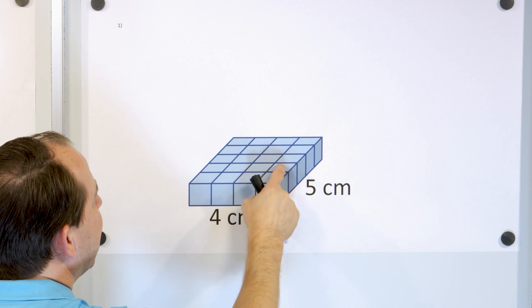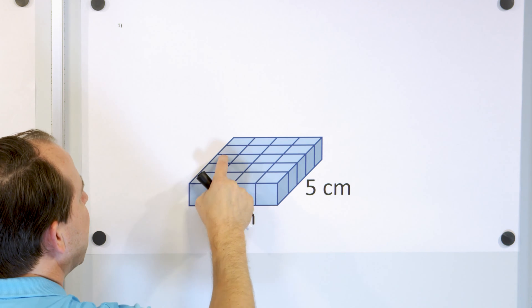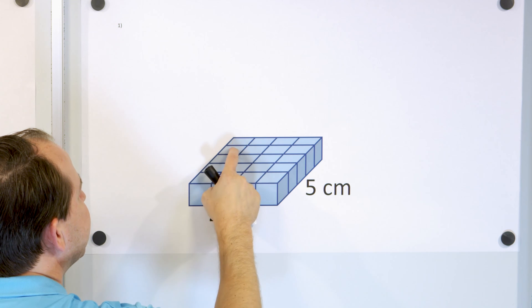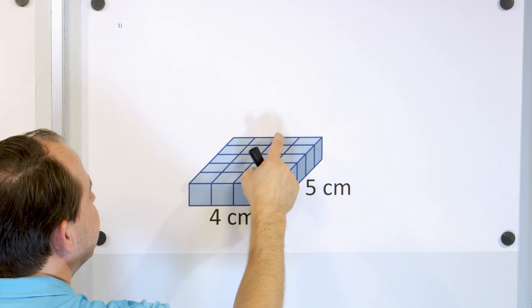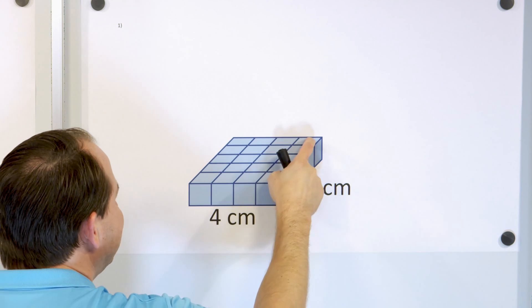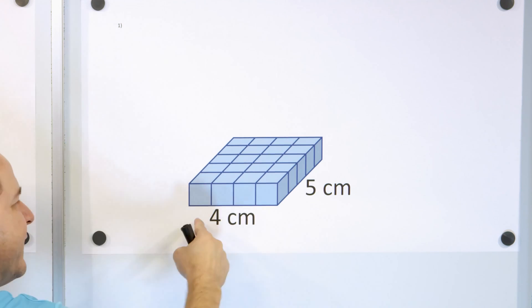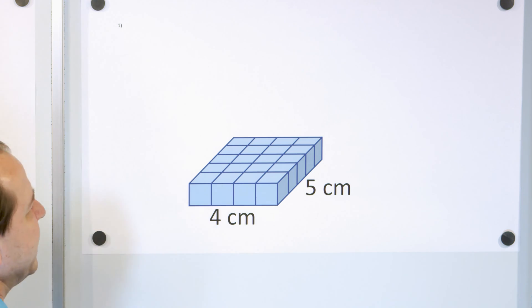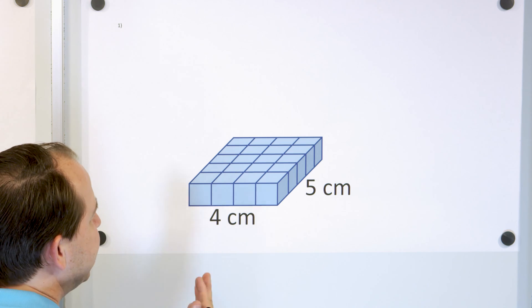Counting the cubes: one, two, three, four, five, six, seven, eight, nine, ten, eleven, twelve, thirteen, fourteen, fifteen, sixteen, seventeen, eighteen, nineteen, twenty. Notice that four times five is 20, so that gives you 20 cubes in the bottom layer.